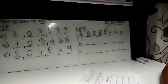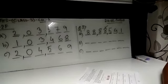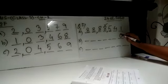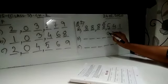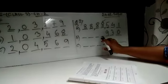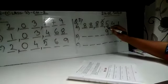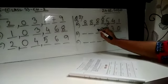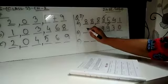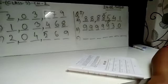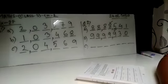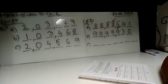9, 0, 3 given. So the smallest number at the end first: 0, then 3, then 9. Now these 4 places what we will put? The largest digit we will put. That is 9, 9, 9 and 9. So the number has become 9999930. Last sum.